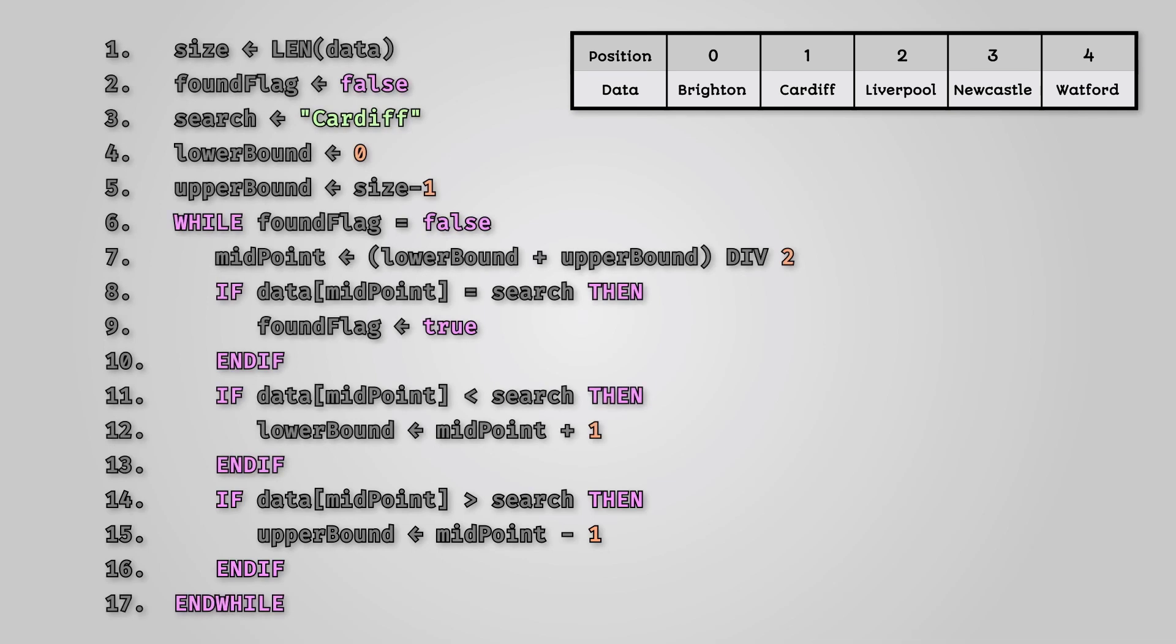Now at the start of the new loop the list to look at will be half the size it was before so we are dividing the larger problem into smaller problems. The code will repeat on this list until the data we're searching for is located.